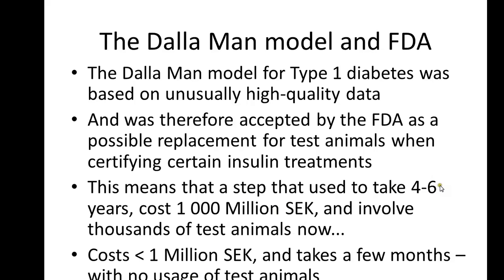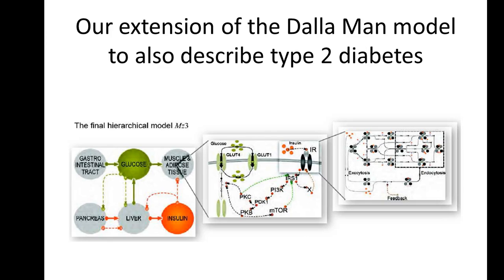This timing is also really important because the time it takes to develop a drug after you have put a patent on it limits how much money you can make from that drug. If you want to say something about this, there is a reference you might want to use. I should also point out that we have ourselves built onto this Dalaman model to do the same thing for type 2 diabetes, developing a multi-level model. The original Dalaman model covers whole-body interactions, and what we have done is adapt it to type 2 diabetes and include intracellular mechanisms.